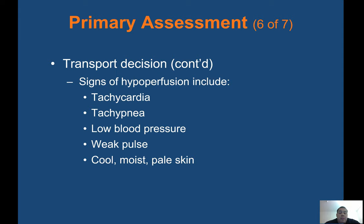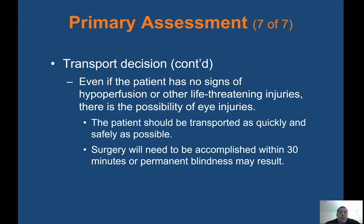Signs of hypoperfusion include tachycardia, tachypnea, low blood pressure, weak pulse, cool, moist, pale skin. Even if the patient has no signs of hypoperfusion or other life-threatening injuries, there is a possibility of eye injuries. Patients should be transported as quickly and safely as possible — surgery may need to be accomplished within 30 minutes or permanent blindness may result.